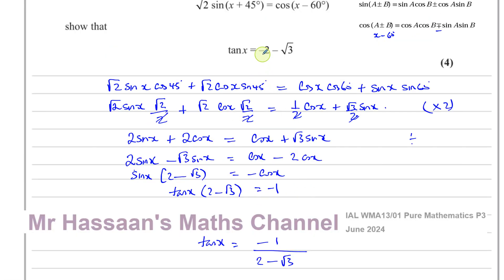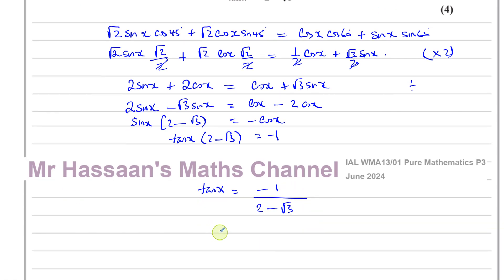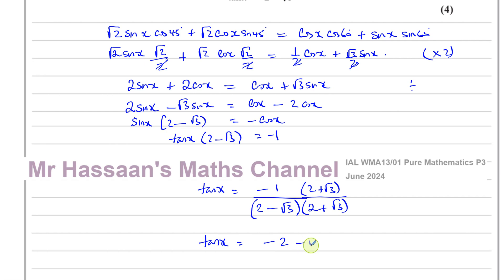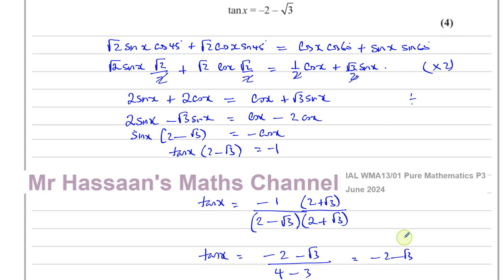Now we have to show it equals negative 2 minus root 3, so we need to rationalize the denominator. I multiply both the numerator and the denominator by (2 plus root 3) — the conjugate. That gives minus (2 plus root 3) over: 2 times 2 is 4, the middle terms give 2 root 3 minus 2 root 3 which is zero, and minus root 3 times root 3 is minus 3, so 4 minus 3 equals 1. So we get minus 2 minus root 3.